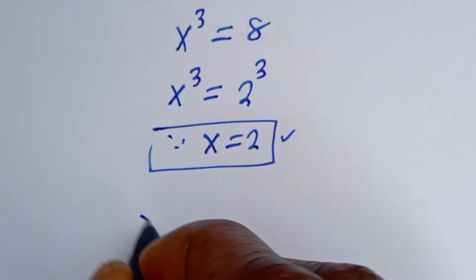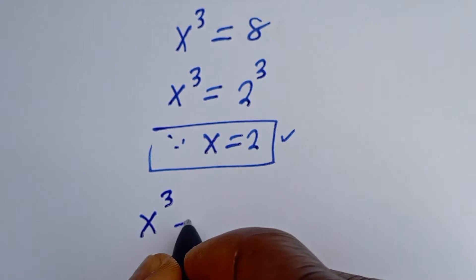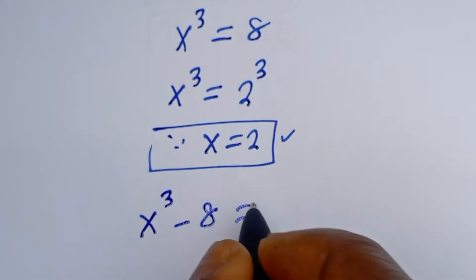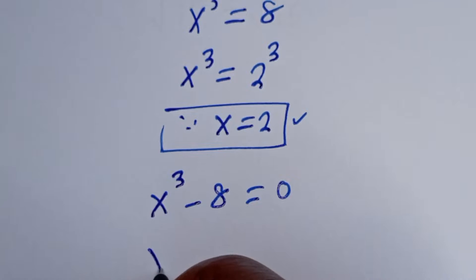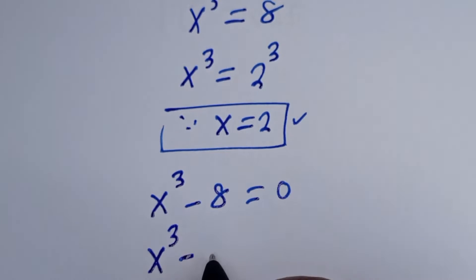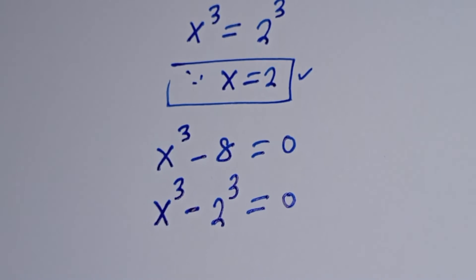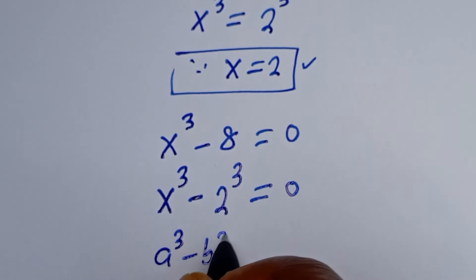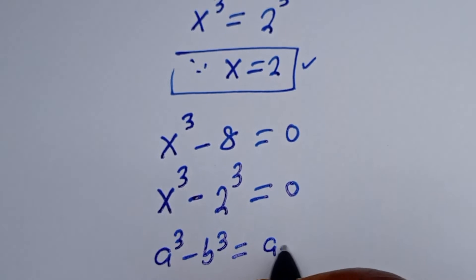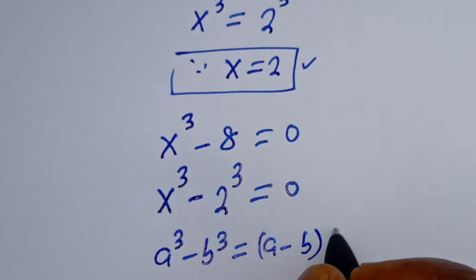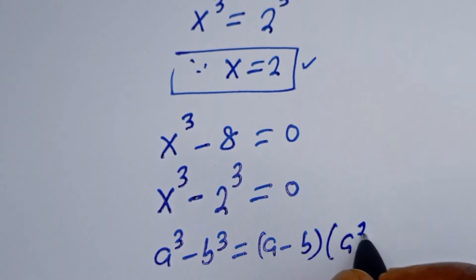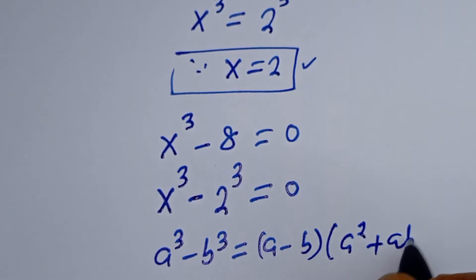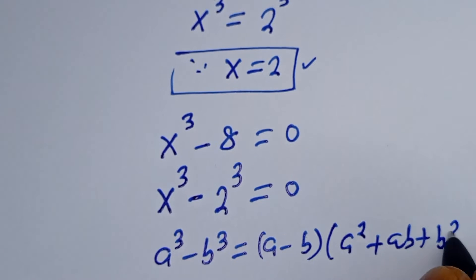We know that s to the power of 3 minus 8 is equal to 0. So s to the power of 3 minus 2 to the power of 3 is equal to 0. Then, if you have a raised to power 3 minus b raised to power 3, this is equal to a minus b, bracket, a squared plus ab plus b squared.